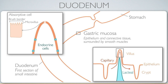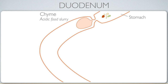Food emerging from the stomach is in a semi-liquid state called chyme — essentially an acidic food slurry. Chyme has hydrochloric acid giving it a low pH. That low pH is recognized by the endocrine cells in the duodenum, which in response release a hormone called secretin.